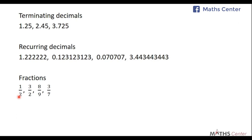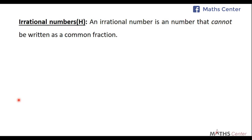Now let's look at irrational numbers. An irrational number is a number that cannot be written as a common fraction — the exact opposite of rational numbers. While rational numbers can be written as common fractions, irrational numbers cannot.